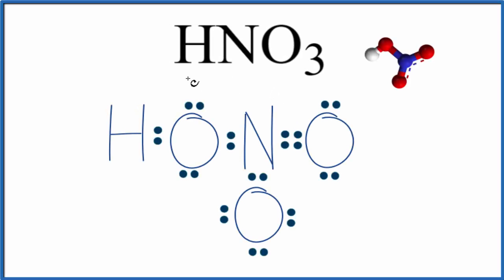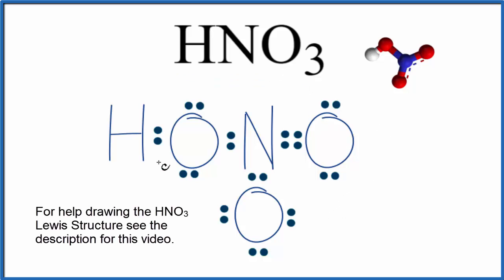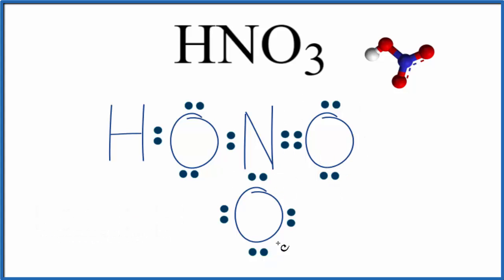Let's take a look at the resonance structures for HNO3. This is nitric acid. We'll start with a Lewis structure. This is a Lewis structure for HNO3, and it's a pretty good Lewis structure. Each atom has eight valence electrons around it, has an octet, and the hydrogen has two.